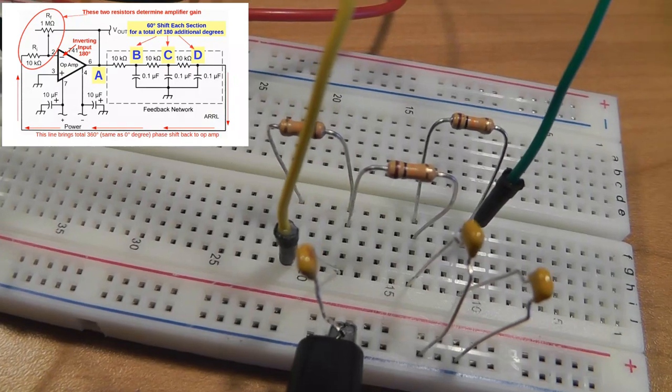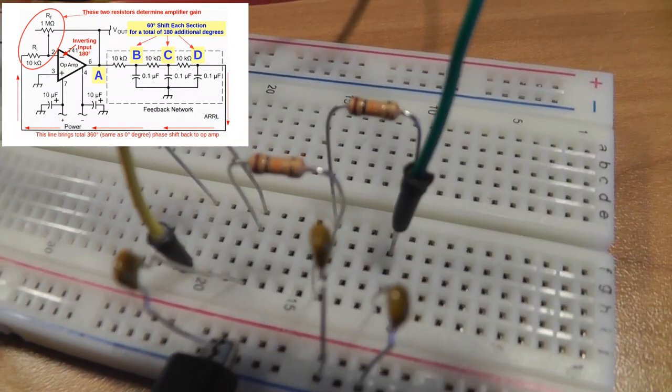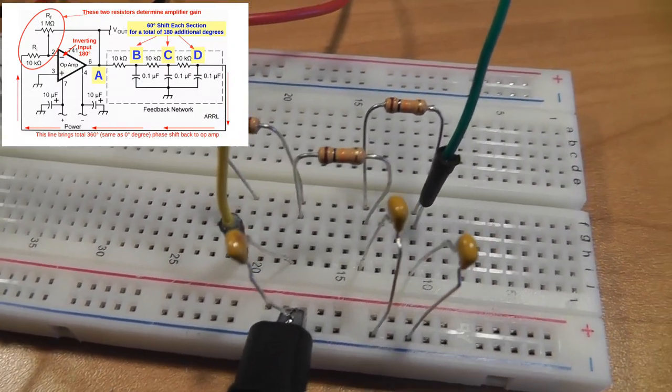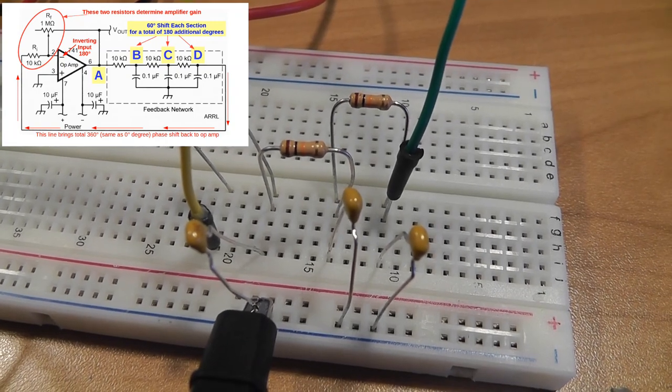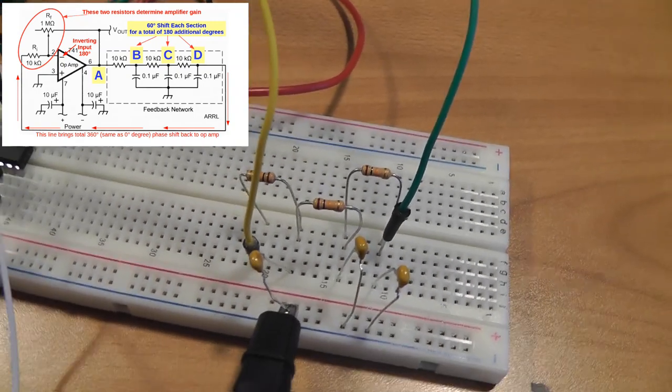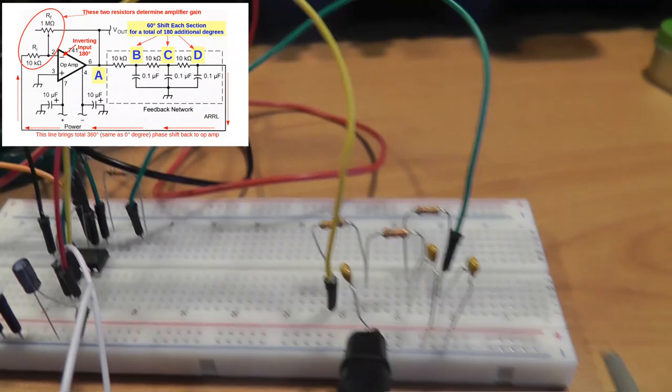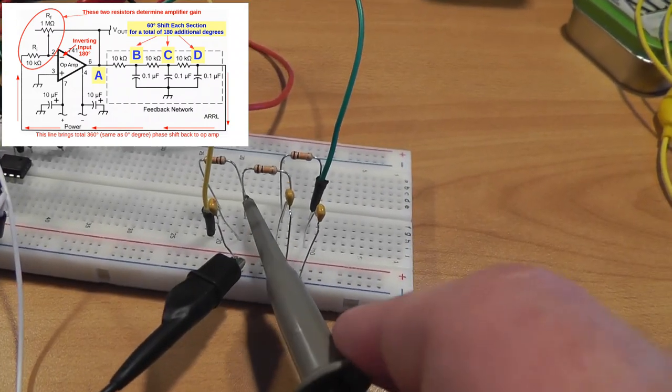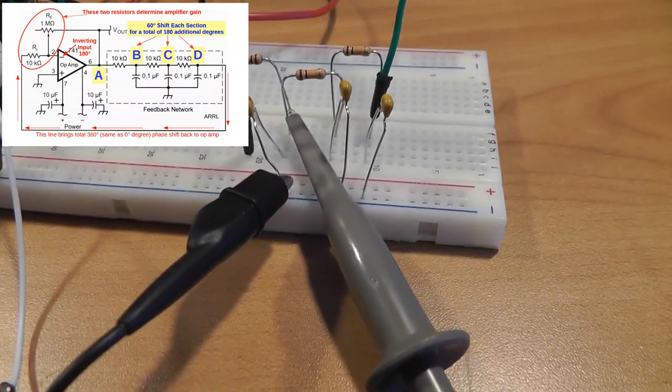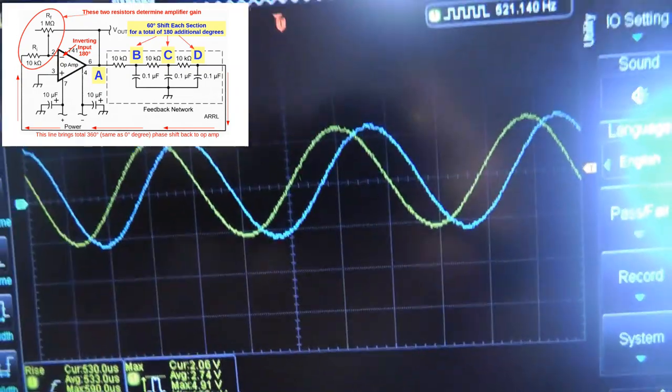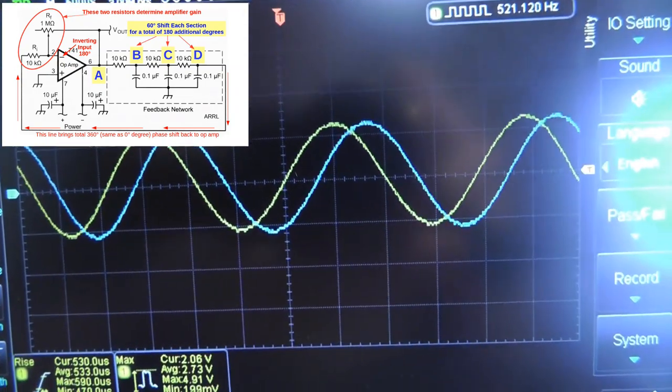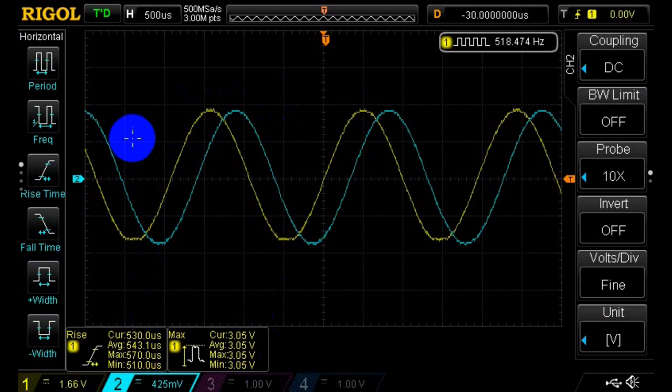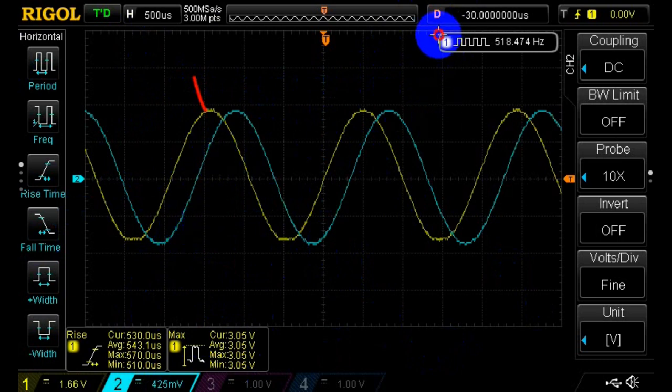Now, as I mentioned, the phase shift network is in three segments, each of which shifts the signal by 60 degrees. Let's check and see if that's true. Using a second channel on the oscilloscope, let's tap the signal after the first section, or at point B. The shifted signal is shown in blue, actually cyan. We take a snapshot for convenience. So the yellow is the output of the oscillator. The built-in frequency counter shows the frequency at about 518 hertz.